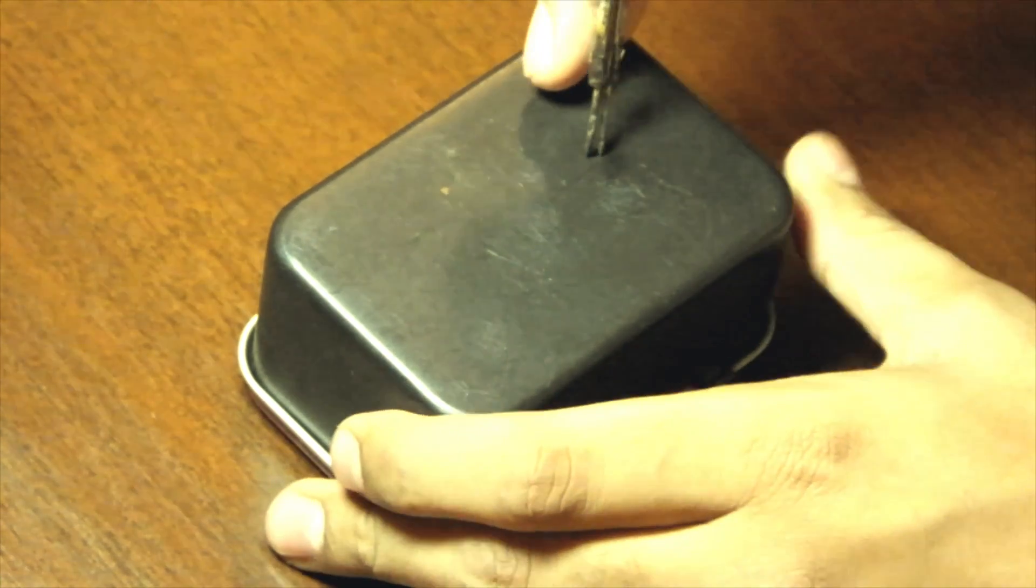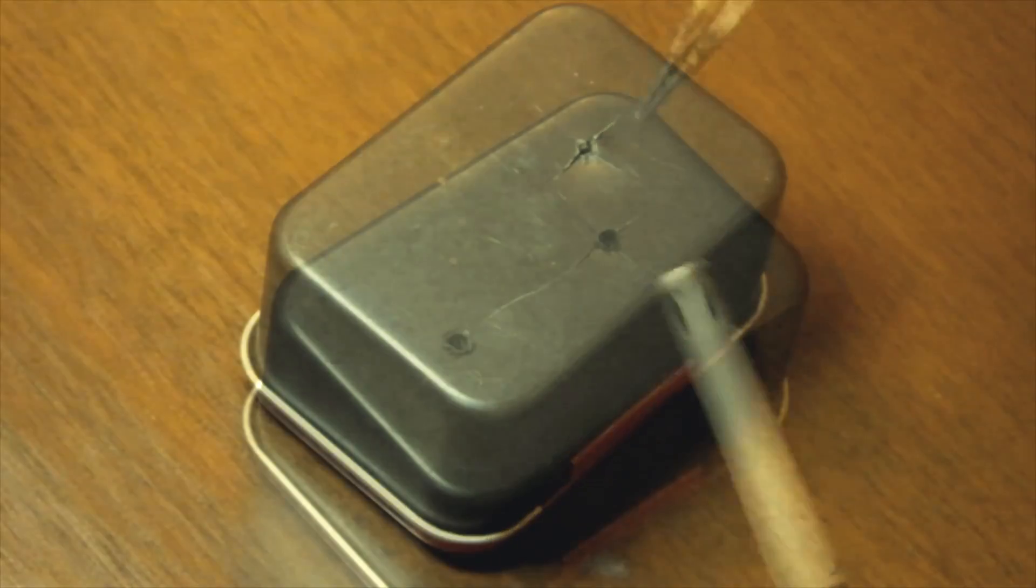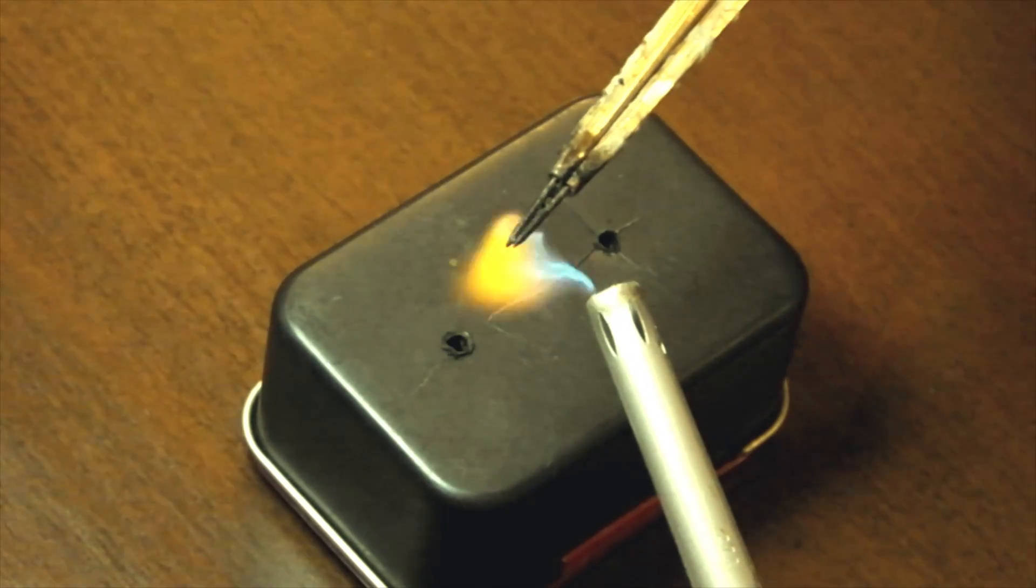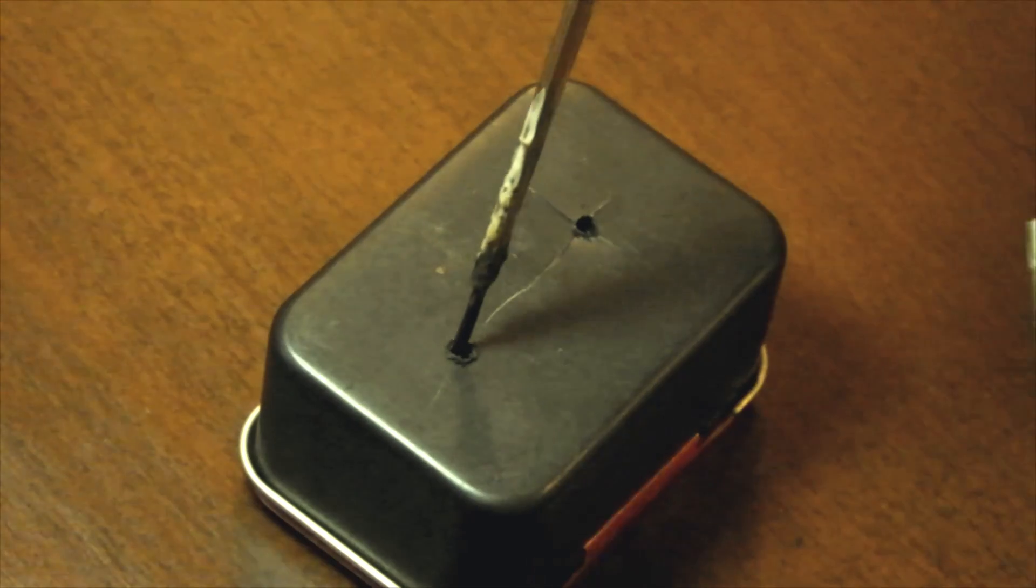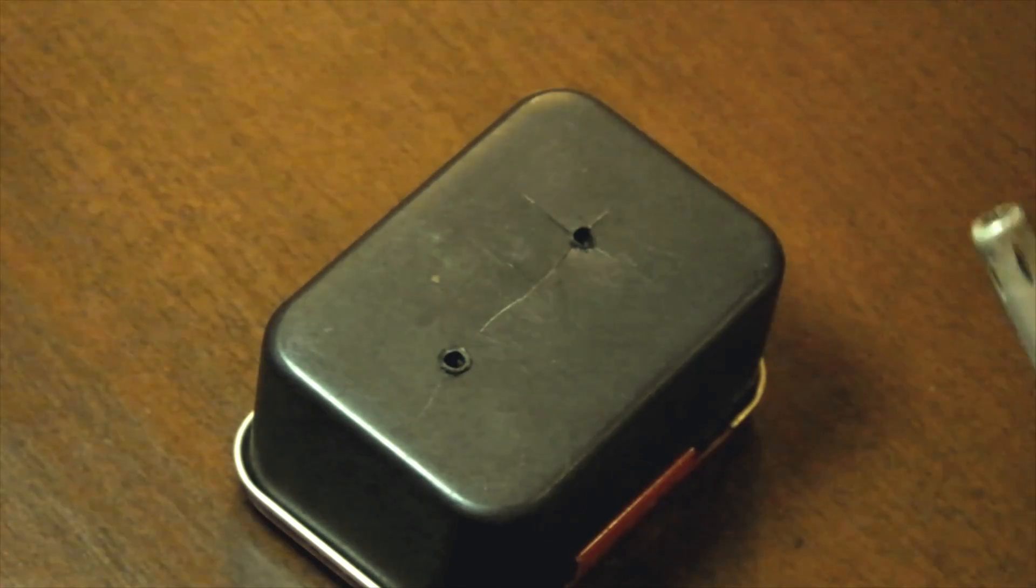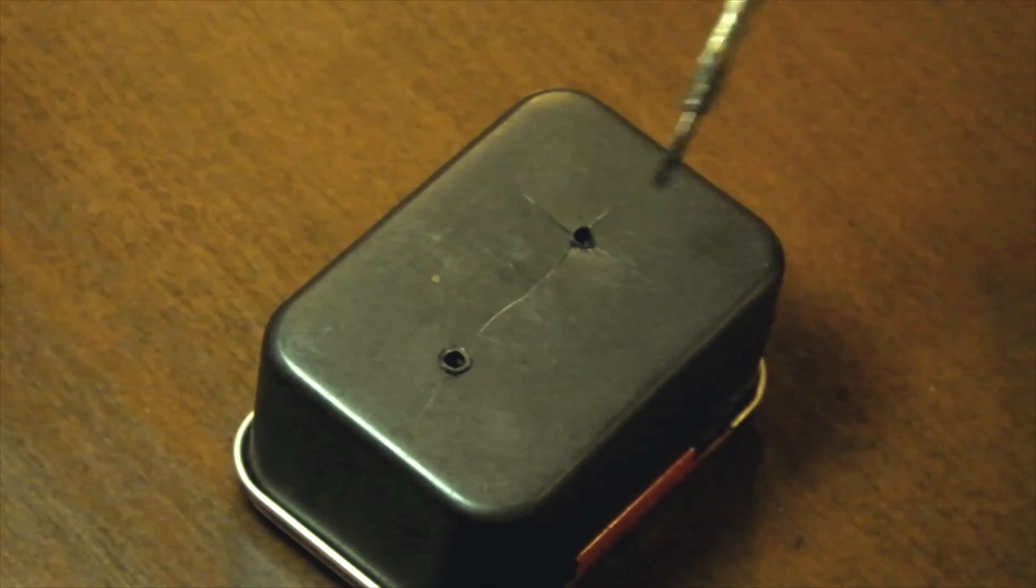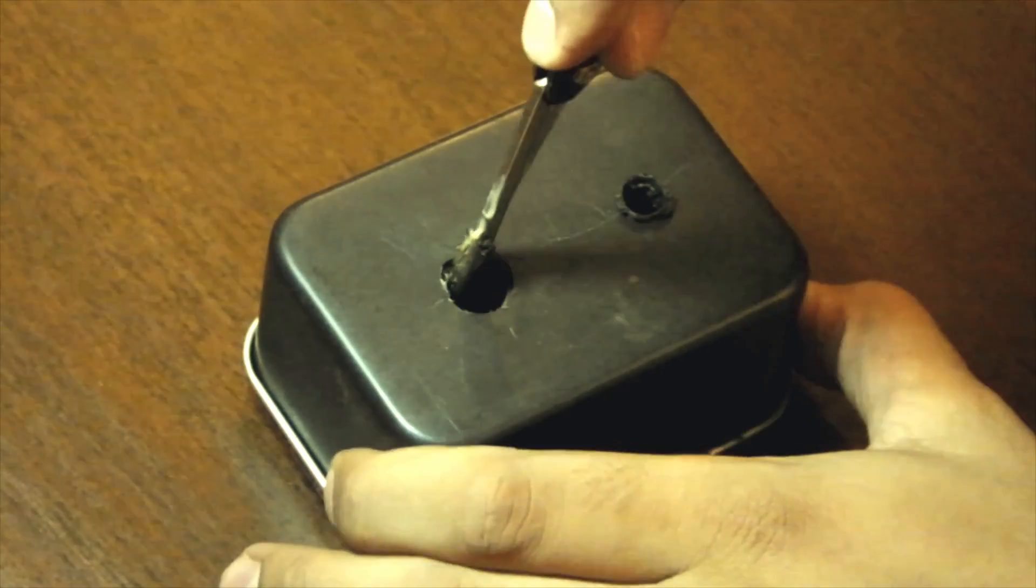Using some sharp object, poke holes in the plastic box to fit the pot and the 6.5mm connector. On second thought, heat the tool before you attempt to make any holes. Keep doing this till the holes are big enough for your components.